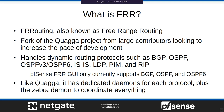FRR handles dynamic routing — BGP, OSPF, OSPFv3, IS-IS, LDP, PIM, and RIP. Our GUI only has support for BGP, OSPF, and OSPF6 at the moment, though we could add other protocols later. FRR is very similar to Quagga — it has dedicated daemons for every protocol, plus the Zebra daemon to coordinate everything. Individual routing protocol daemons talk to Zebra, which talks to the operating system and maintains the central routing database. Zebra is essentially the coordinator or main routing daemon of FRR.